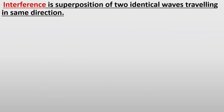Pehle hum previous knowledge dekh lete hain. Isse pehle aapka Interference of Sound Waves detail se parh chuke hain. Interference is the superposition of two identical waves traveling in the same direction. Agar do identical waves ek direction mein travel kar rahi hon aur wo superpose karein to resultant phenomena ko hum interference kehte hain.